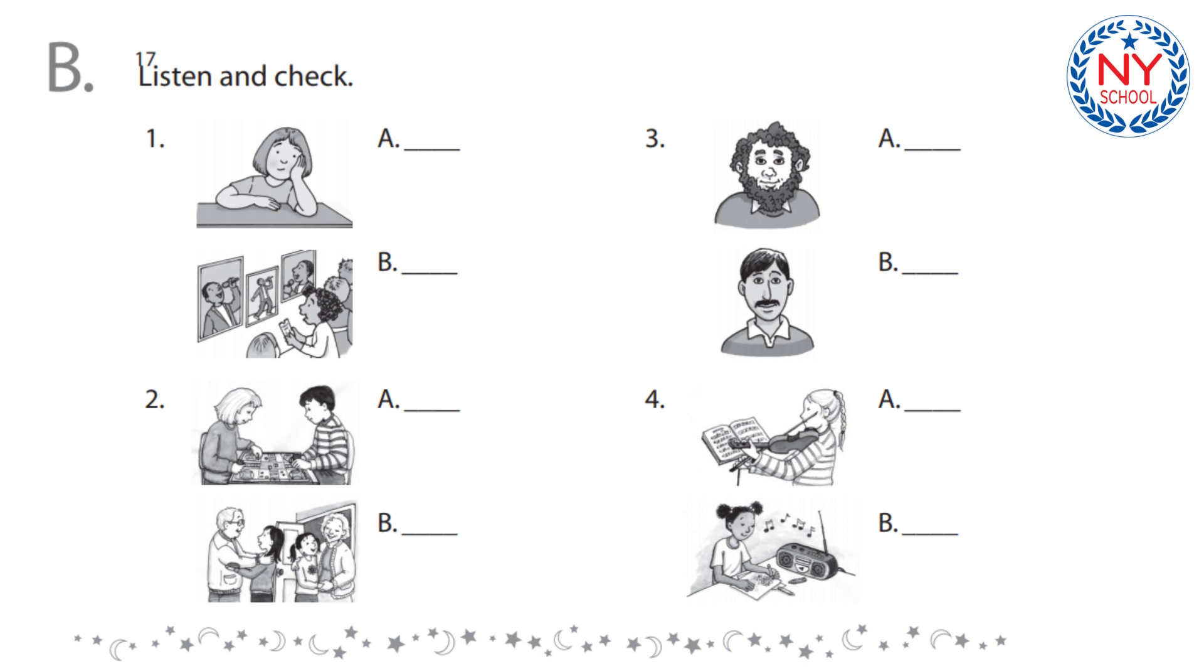3. What does his cousin look like? His cousin has short black hair and a mustache. 4. Did she listen to the radio this morning? No, she didn't. She practiced the violin.